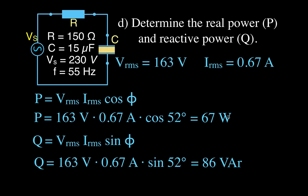The watt and the volt-ampere-reactive are the same unit — VA is equivalent to a watt. We add the R to designate reactive power. So VAR and watt are the same unit, which you can derive as joules per second. That completes part D.